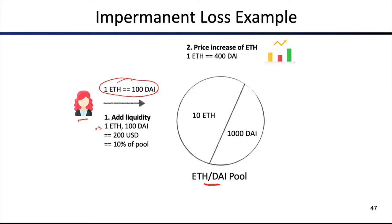Now let's assume that there's a price change. The price of ETH/DAI increases, so the new price is one ETH worth 400 DAI. So ETH basically increased fourfold in value in this particular example, which is obviously a significant event.